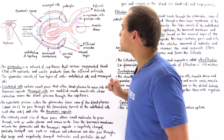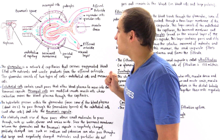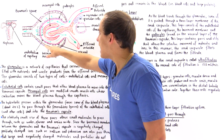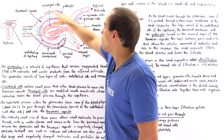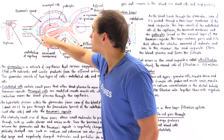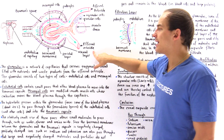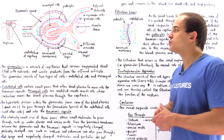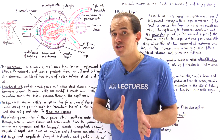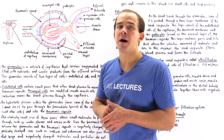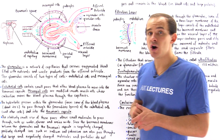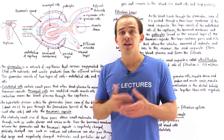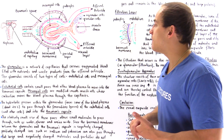Now what about the Bowman's capsule? The Bowman's capsule consists of a parietal layer of cells, which is the outer layer found on both sides, as well as an inner layer known as the visceral layer. The visceral layer contains a specialized type of filtration cell known as the podocyte, which contains very small slits that allow the filtration of our blood.